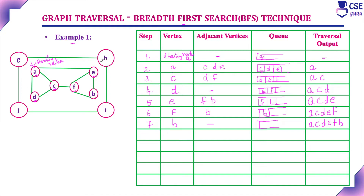We have completed the first graph, but there is one more graph which is not directly connected — it is a disjoint graph. As stated in the design steps, if any unvisited vertices remain, BFS is restarted. So for this outer graph, BFS should be restarted. We consider one vertex as the starting vertex — G. We insert G into the queue with no traversal output initially.